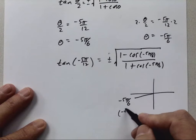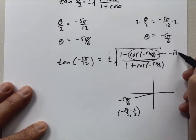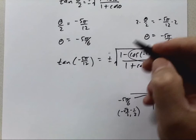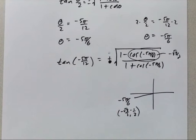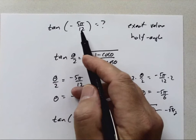Plugging in, cosine of negative 5π over 6 is negative square root of 3 over 2. For the plus or minus, since the original angle negative 5π over 12 is in quadrant 3, and the tangent in quadrant 3 is positive, I take the positive root. So those are the steps: given a trig function at a non-special angle, find exact value using half-angle formulas.